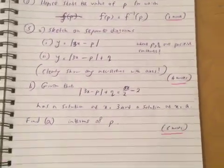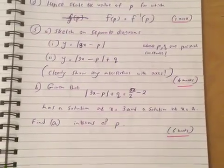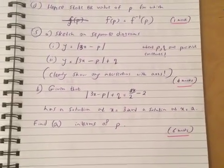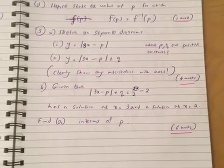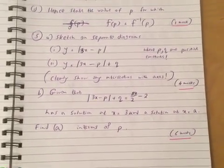Question 5: Sketch on separate diagrams y equals 3x minus p and y equals 3x minus p plus q, where p and q are positive constants. Clearly show any intersections with axes.